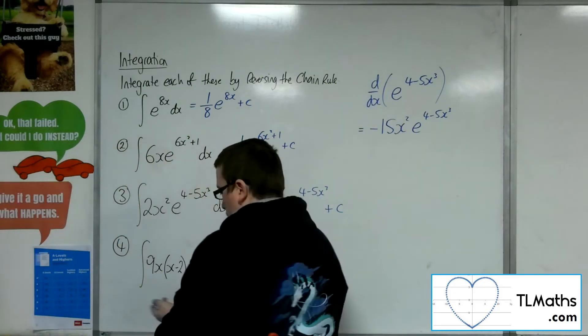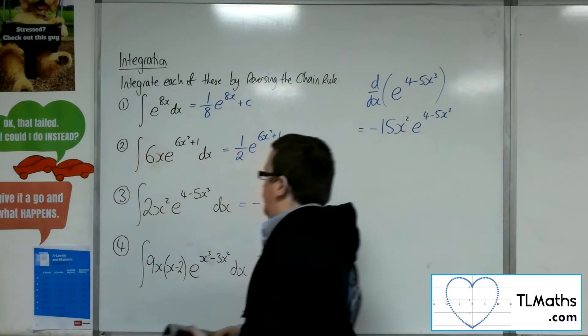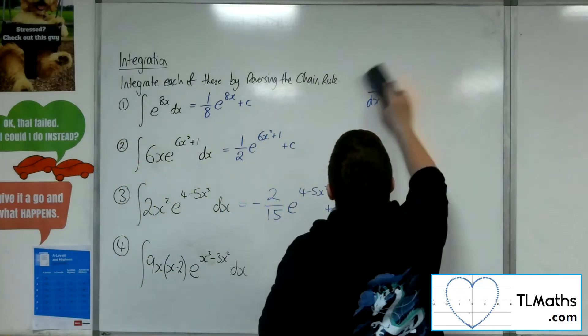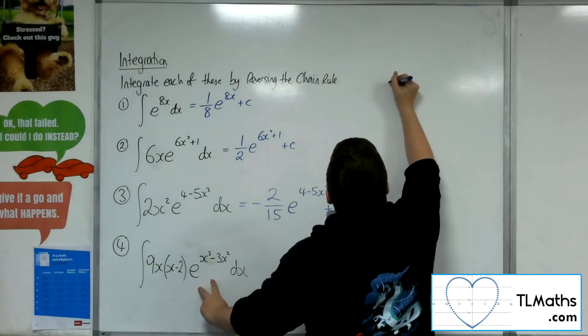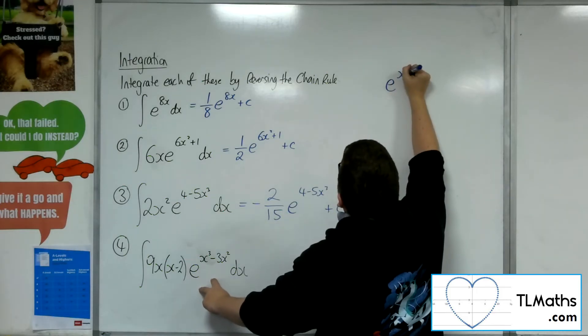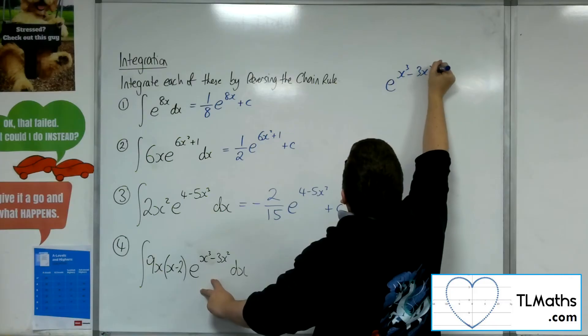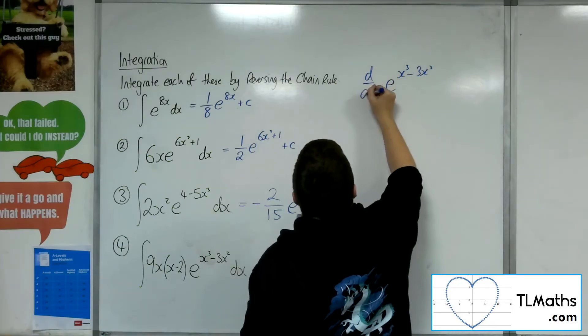Right, let's have a look at number four, last one. So for number four, we're going to look at that e to the x cubed minus 3x squared. And I'm going to differentiate it.